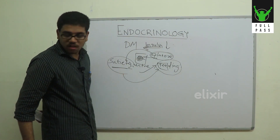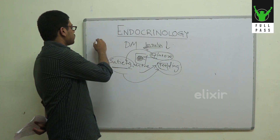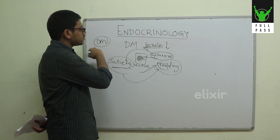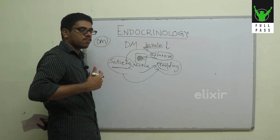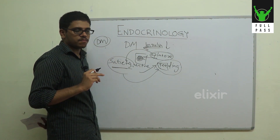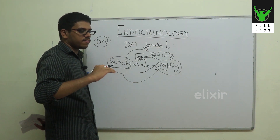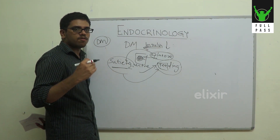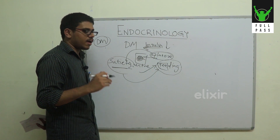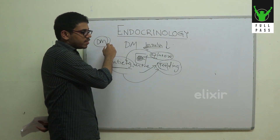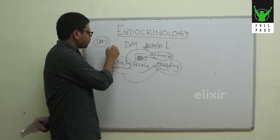The next important topic is polyuria in diabetes mellitus. In diabetes mellitus, blood glucose rises above the renal threshold. When blood glucose exceeds the renal threshold — around 180 mg/dL — glucose is not fully reabsorbed by the kidney and begins to appear in the urine.